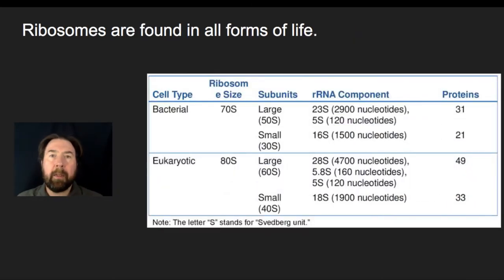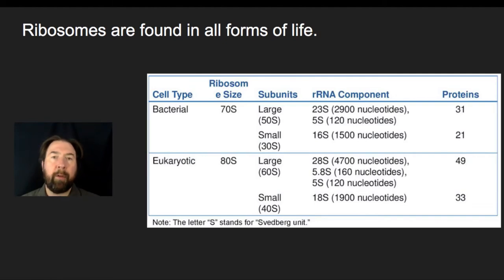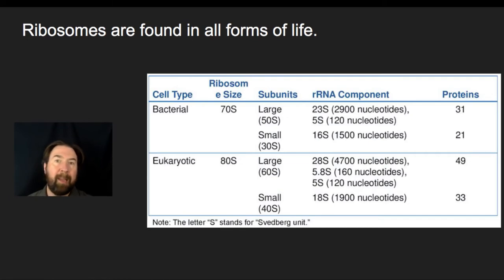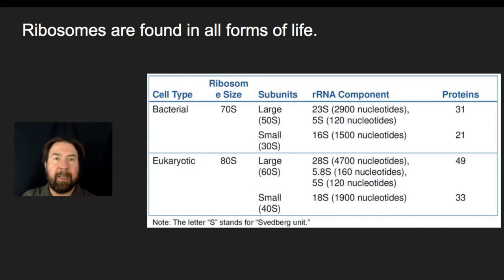Ribosomes are found in all living cells. By comparing the structures of ribosomes, we're able to build a giant cladogram and see how different types of organisms are related. Ribosomes have two subunits and are composed of a combination of ribosomal RNA and proteins. We can look at the sequences of those ribosomal RNA subunits, the proteins, and the DNA that codes for those nucleotide sequences — any one of those gives us evidence to see how things have descended and modified over time as organisms evolved independently.